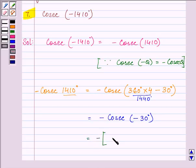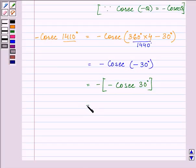Further, we know that cosec of minus theta equals minus cosec theta. So here we can have minus cosec of minus 30 degrees. Minus minus will become positive, so we have positive cosec 30 degrees.